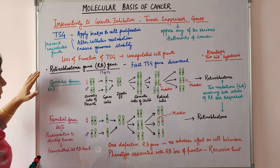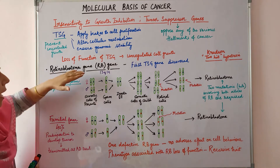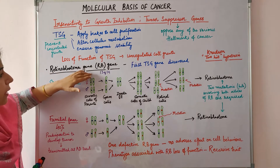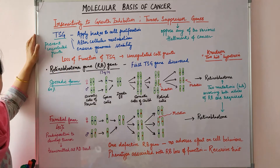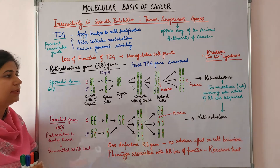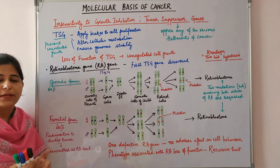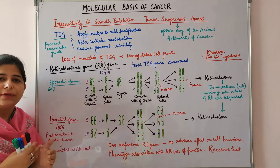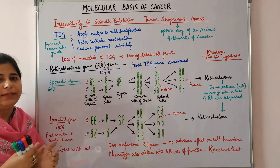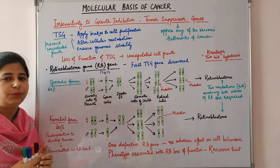We will be studying about the retinoblastoma gene, or the RB gene. It is present on the Q arm of chromosome 13 and it was the first tumor suppressor gene discovered. It was discovered by studying a rare inherited disease, familial retinoblastoma.